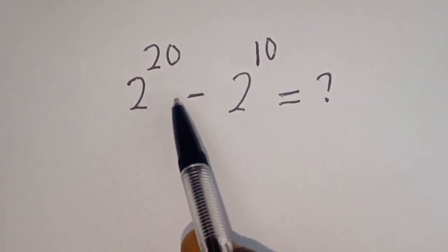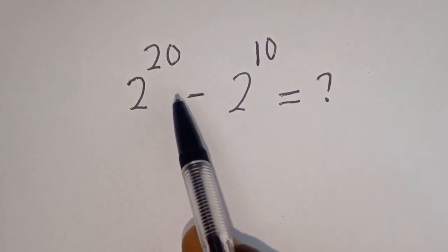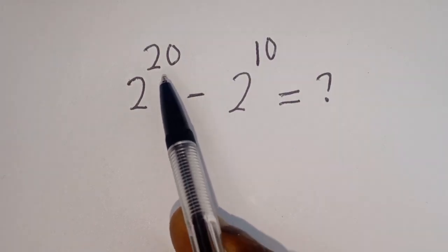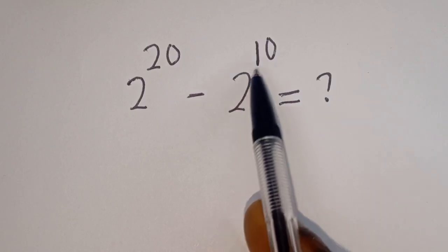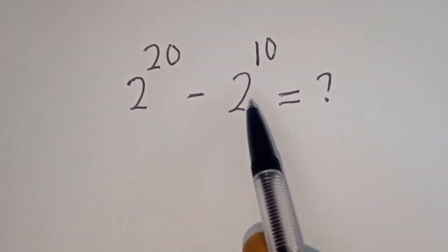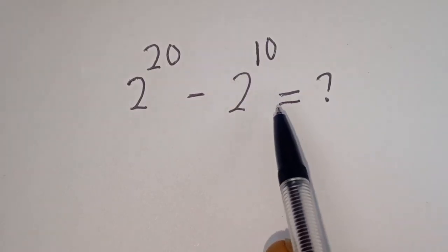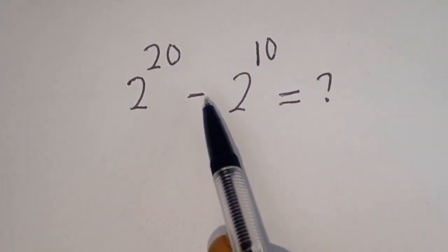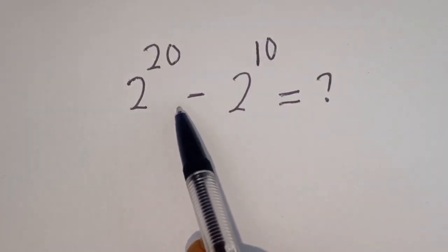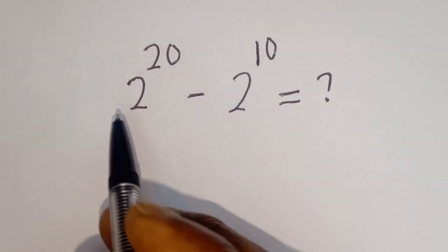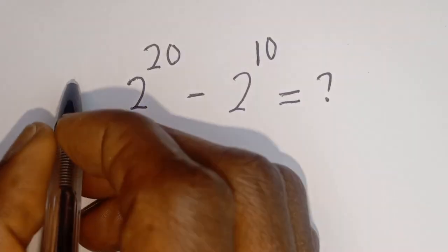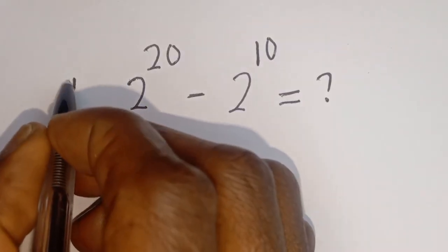Hello, how to simplify this nice math problem without using a calculator? 2 to the power of 20 minus 2 to the power of 10 is equal to what? We are going to solve two questions here, but let's consider this first. Let's call this question number one.